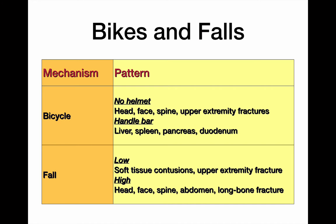Similarly with bicycles, the helmet makes the biggest difference. Without a helmet, you're more likely to see head injury, spine injury, or upper extremity fracture as the patient extends their hands. With a helmet, the handlebar becomes the culprit — impacting the liver, spleen, pancreas, and sometimes the duodenum. Handlebar injuries are almost notorious in pediatric surgery and are a typical injury pattern all pediatric surgeons understand.